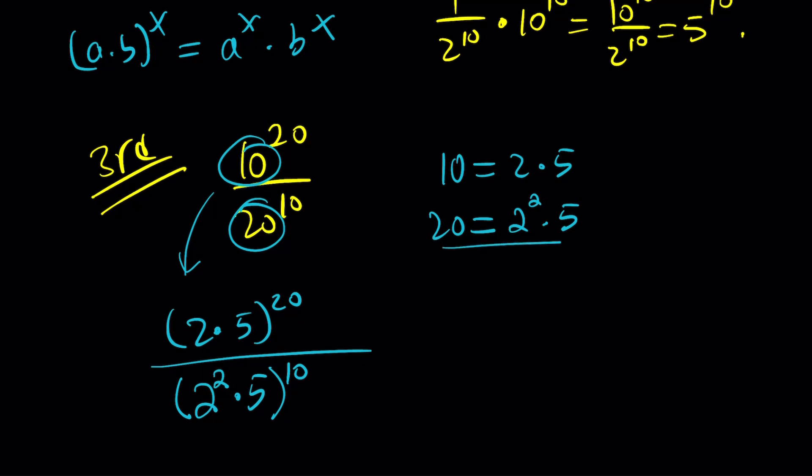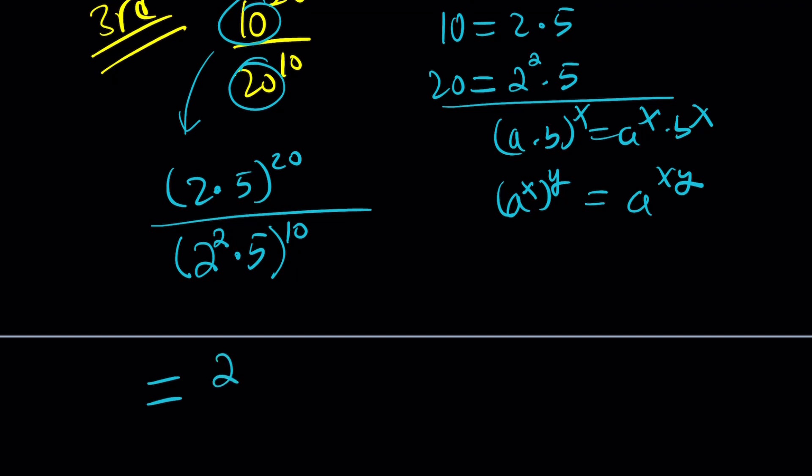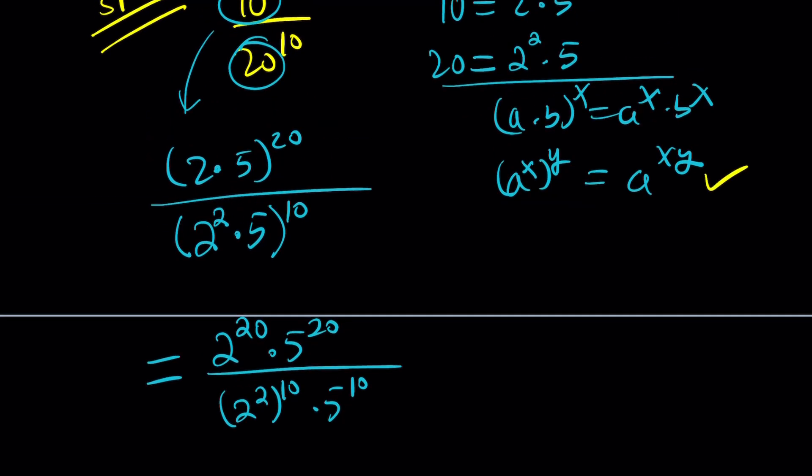Now, from here, what can we do? Again, we have the situation where we have a times b to the power x, which is a to the x, b to the x. But not only that, we also have something like a to the power x to the power y, which is a to the power x, y. So we're going to write this as follows then. 2 to the 20 times 5 to the 20 divided by 2 to the second to the 10 times 5 to the 10.